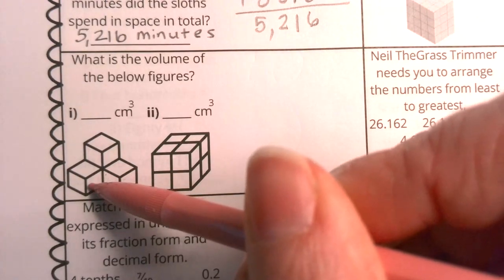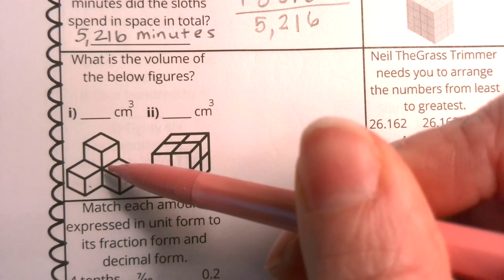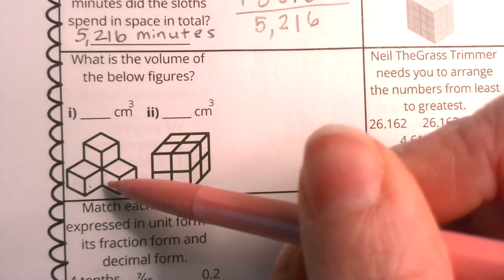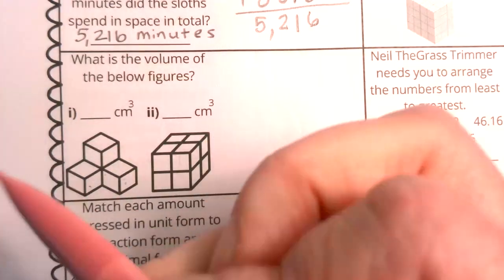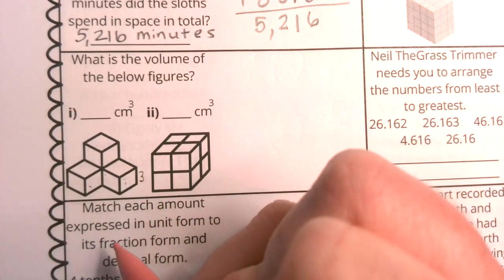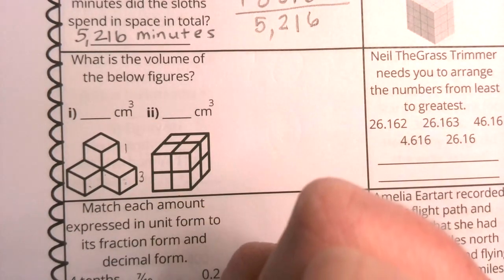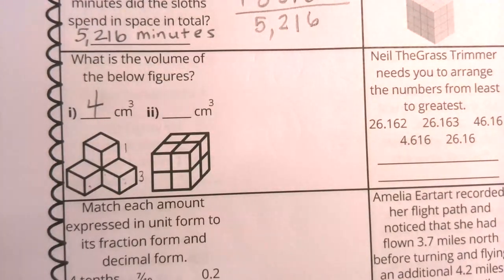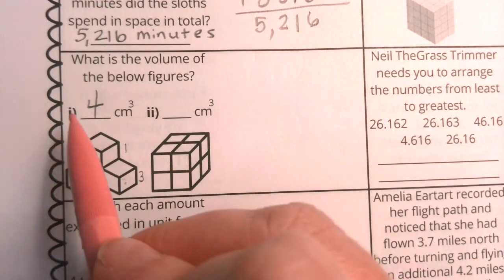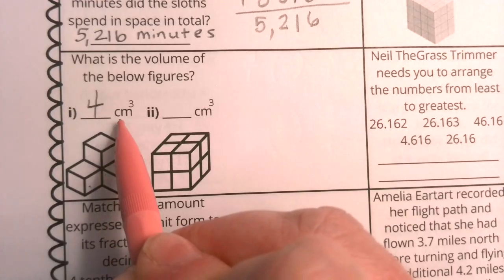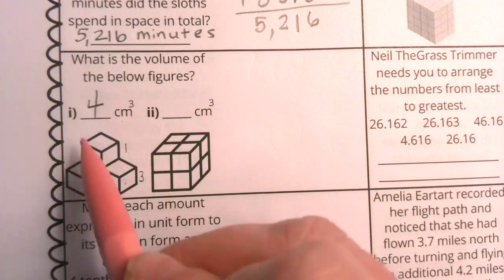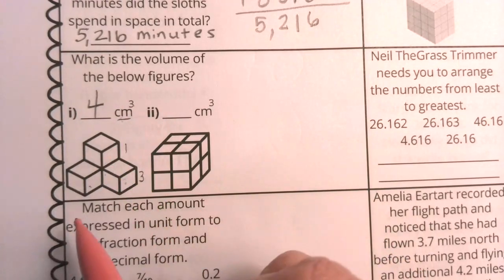One, two, three, because there's a hidden cube underneath this one that's supporting it. So if there are three cubes on the bottom layer and one cube on the top layer together, that's giving us four cubes. Or, since it's volume, we would say four centimeters cubed because we can be specific about our unit. These are centimeters cubed.